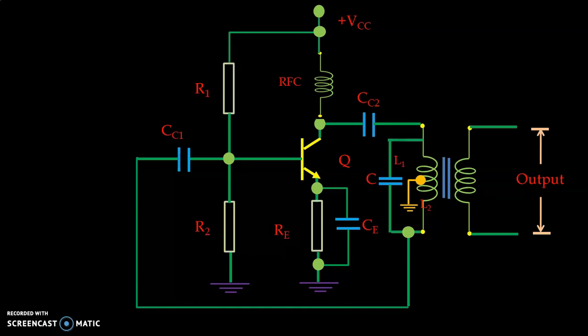Now let us understand the working of the Hartley oscillator. The energy required for the tank circuit to generate the oscillations is provided by the radio frequency choke. When power is switched on, current passes through the collector. And the energy is transferred through the coupling capacitor CC2 to the tank circuit. Oscillations are generated in the tank circuit.